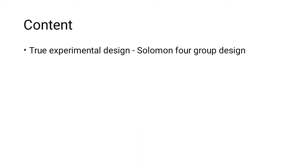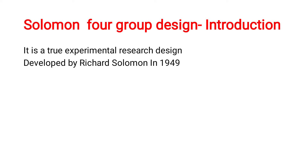Under true experimental design, today's topic is Solomon 4 Group Design. In the name itself it tells — it was developed by Richard Solomon in the year 1949. In the name they are also telling how many groups are there: there are 4 groups, out of which 2 are experimental groups and 2 are control groups. It is a true experimental research design developed by Richard Solomon in 1949.